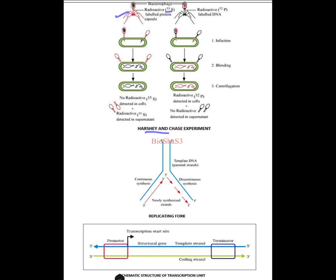For the Hershey and Chase experiment, mainly you have to show the bacteriophage along with ³⁵S and ³²P — ³²P will be in the phosphorus and ³⁵S in the sulfur. When the infection and blending-centrifugation happens, you can see that radioactive ³⁵S is detected in the supernatant but radioactive ³²P is detected in the cell. That is the Hershey and Chase experiment.